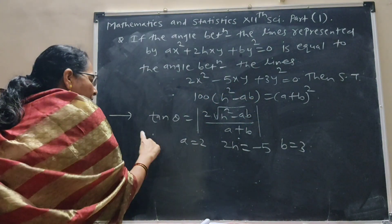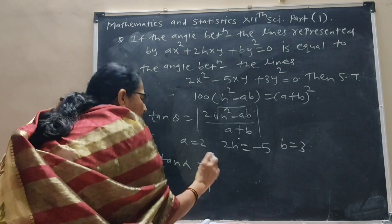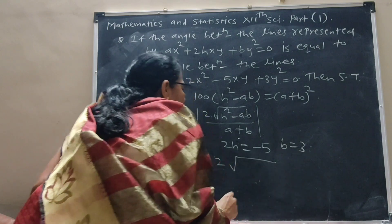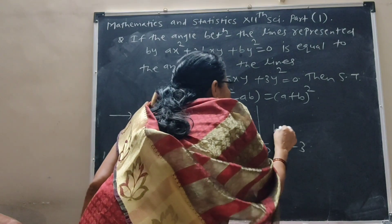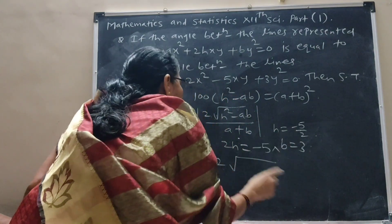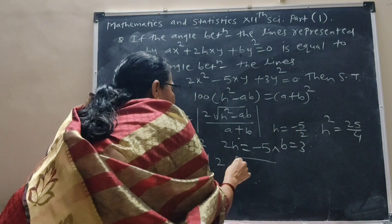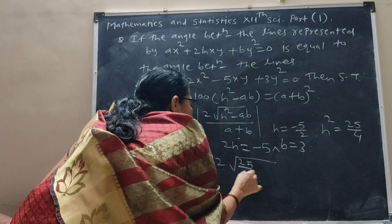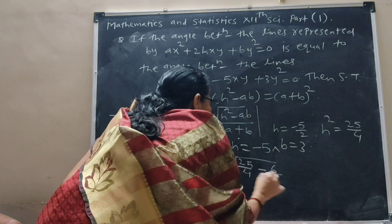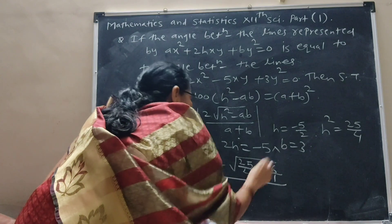The angle between these two lines is tan α. Substituting values into the formula: h = −5/2, so h² = 25/4. Then h² − ab = 25/4 − 6 = (25 − 24)/4. And a + b = 2 + 3 = 5.